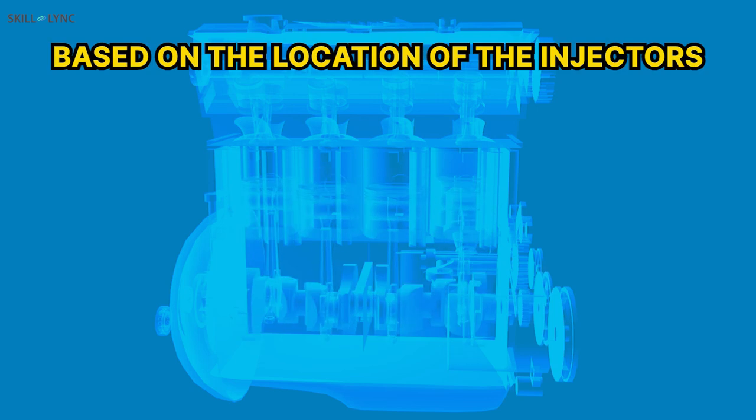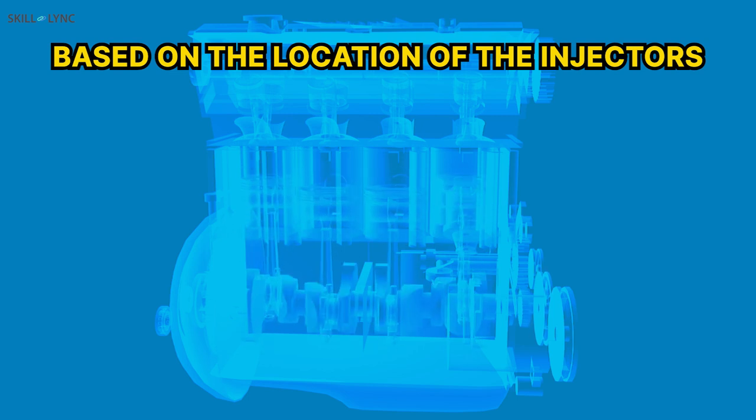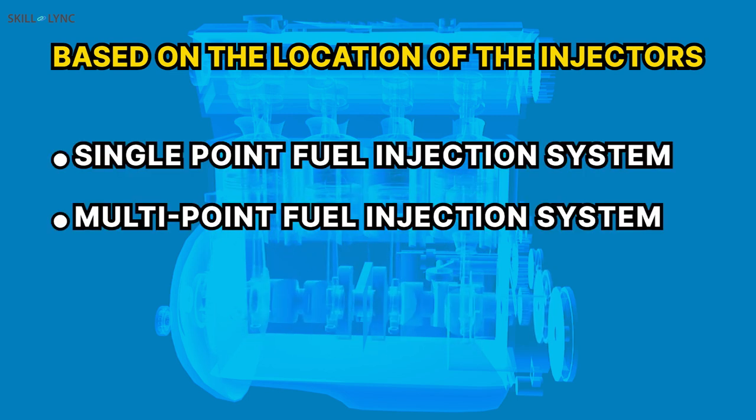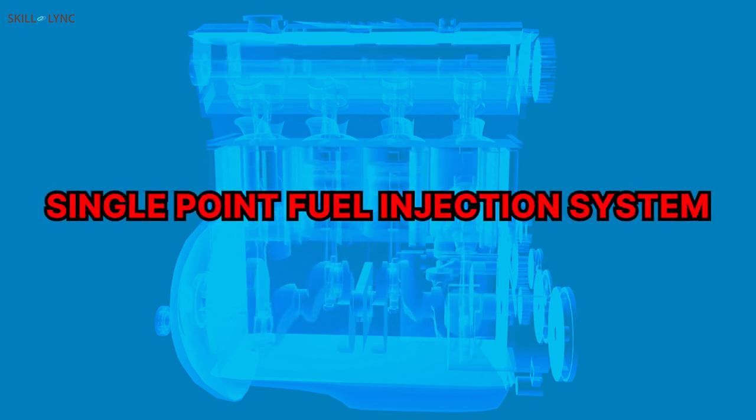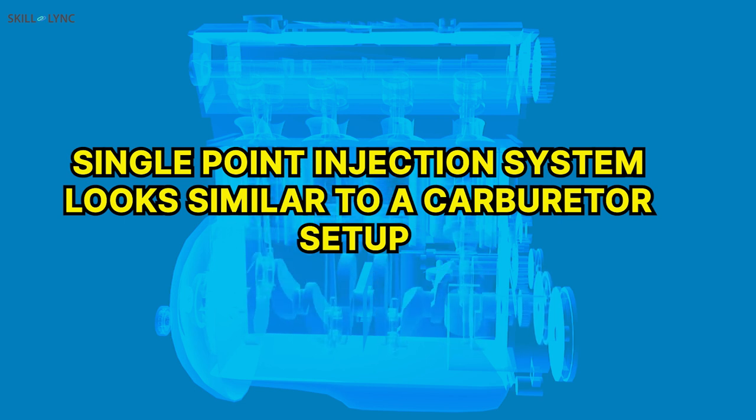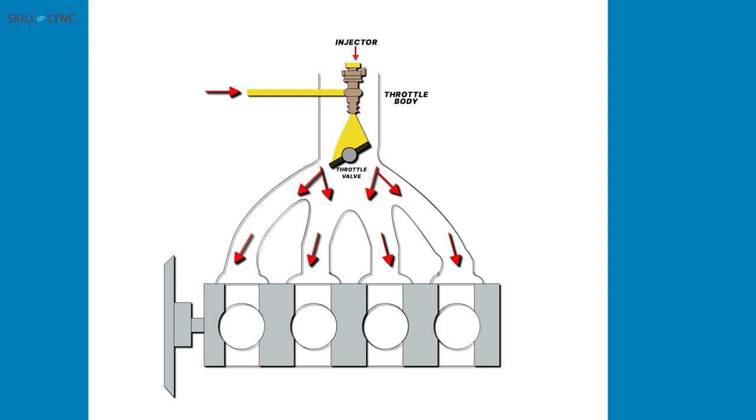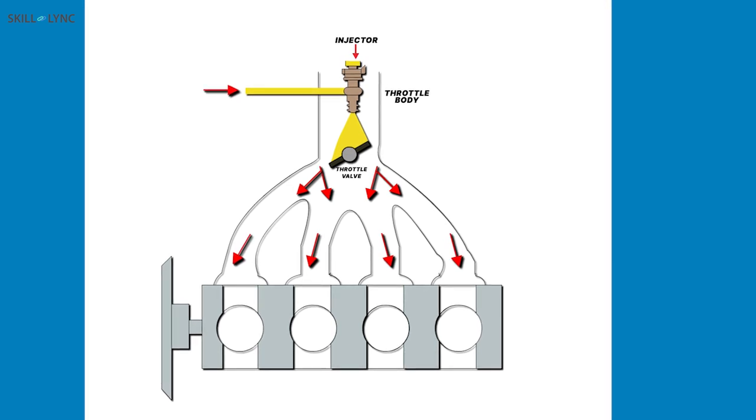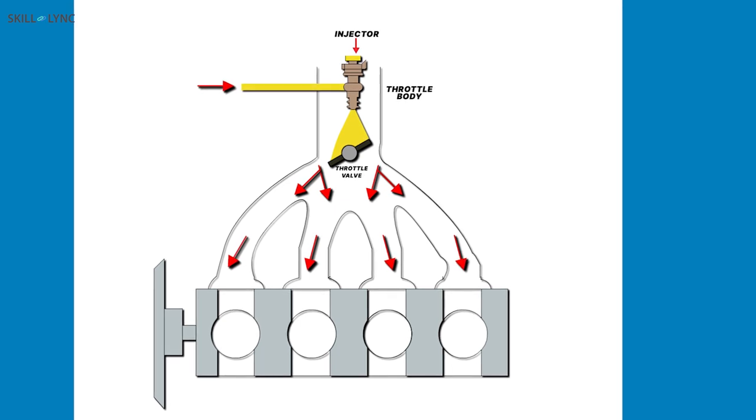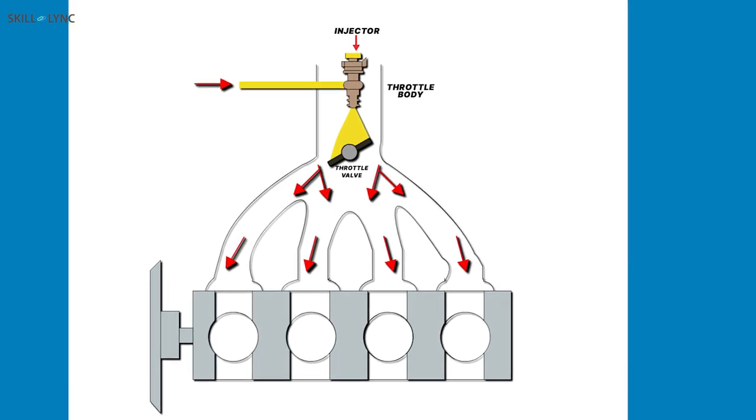Based on the location of the injectors, fuel injected system in SI engines can be divided into two types: single point fuel injection system and a multi-point fuel injection system. Let's get started with the single point fuel injection system. Single point injection system looks similar to a carburetor setup. It has one or two injectors placed in the throttle body, that is the passage through which the air intake to the engine is controlled. Hence, this is also known as throttle body injection.